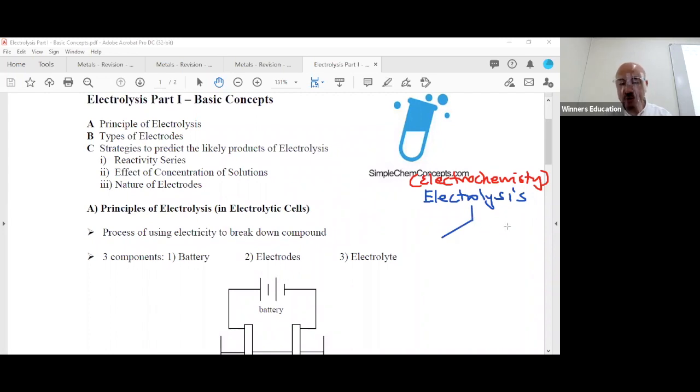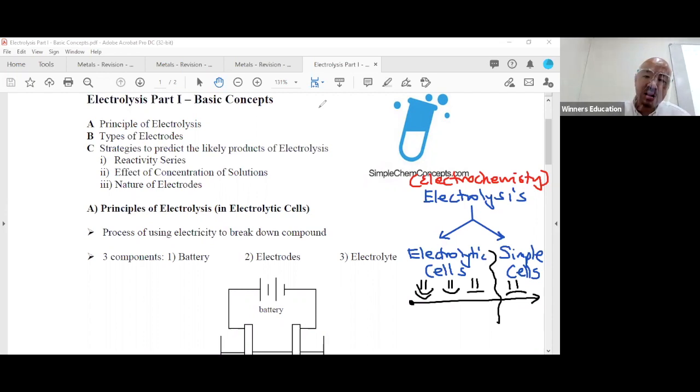In the electrolysis topic, we're going to learn two things: electrolytic cells and simple cells. If we are IP students, the name they give is a bit different. Most schools should start here and end here. Initially it's quite okay, quite easy, but after a while it becomes a bit difficult towards the end. When they pass here, I'm giving you a warning, they start to say 'I don't understand simple cell.'